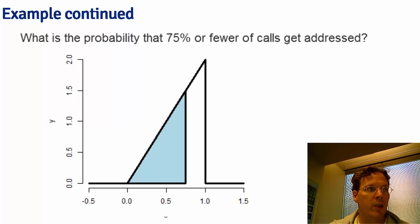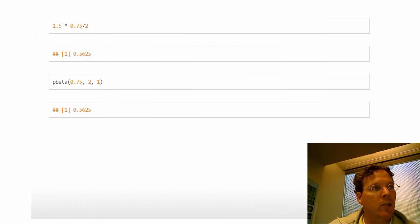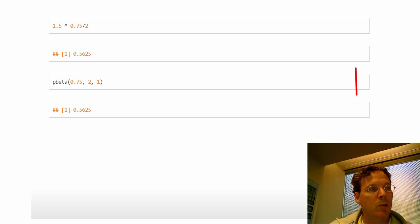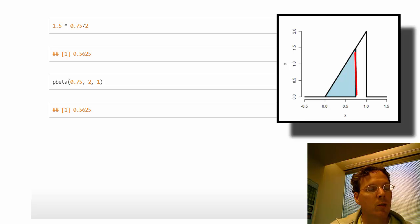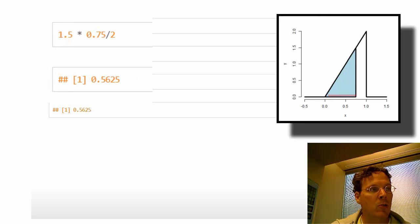Let's work through an example with this density. What's the probability that 75% or fewer calls get addressed in a randomly sampled day? It's another right triangle. The height at x = 0.75 is 1.5, because the function is 2 times x. The base is 0.75. So one half times 0.75 times 1.5 works out to 56%, as shown here.